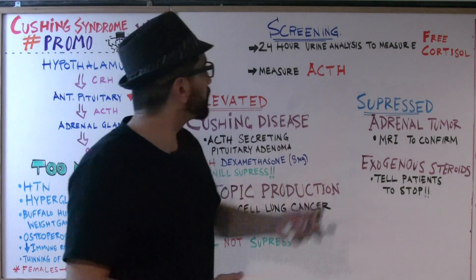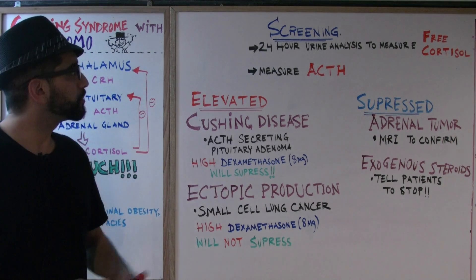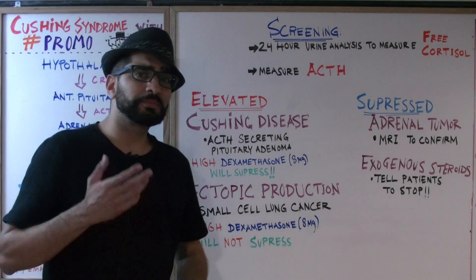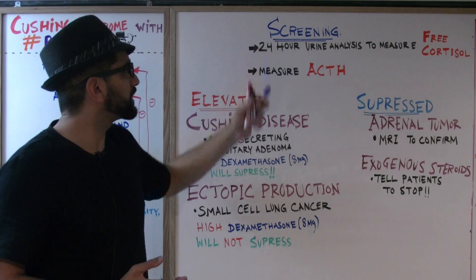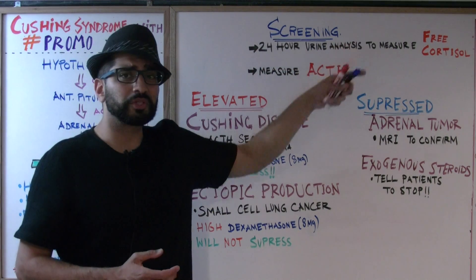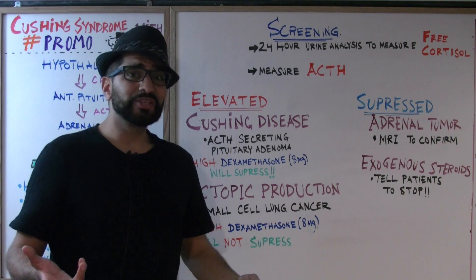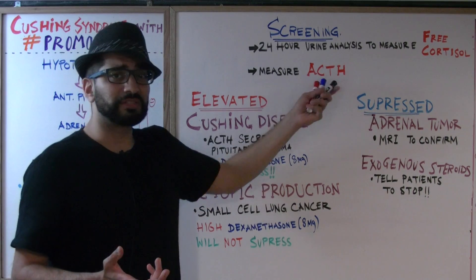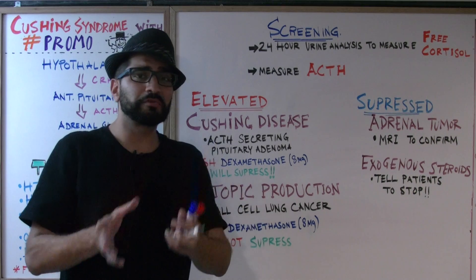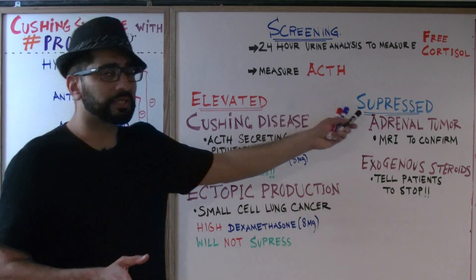Now let's talk about the causes of too much cortisol. If you suspect hypercortisolism, the first thing you do is a screening test: a 24-hour urine analysis to measure free cortisol, which will obviously be elevated. The next step is to measure ACTH levels — these will either be elevated or suppressed, and that tells you where to focus.